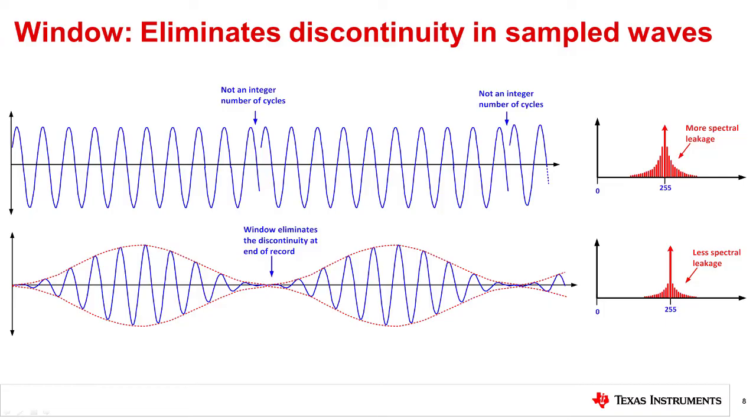On the other hand, when the signal is not an integer multiple of the sampling frequency, the repeated waveform will not smoothly connect to the previous waveform and there will be a discontinuity. The time domain waveform at the top shows the discontinuity between each record. This discontinuity is what creates spectral leakage.